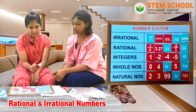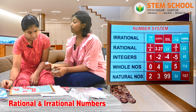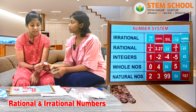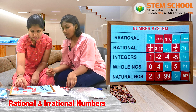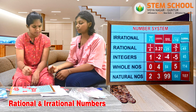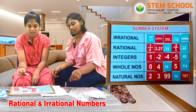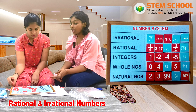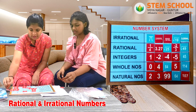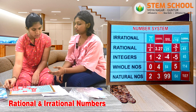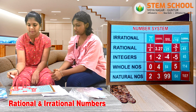Minus 2? Minus 2 is an integer. What about 3? 3 can be a whole number, integer and a natural number too. What about 2? 2 can also be an integer, whole number and a natural number. 1 by 4? 1 by 4 is a rational number of course. And 4? 4 can also be an integer, whole number and a natural number.